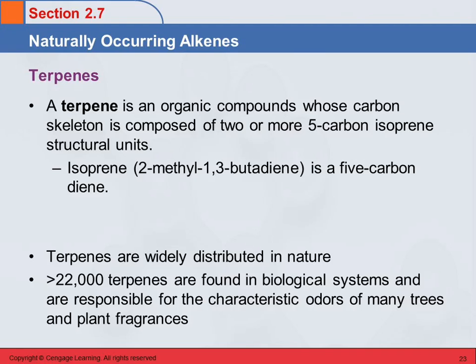Another group of naturally occurring alkenes are called terpenes. A terpene is a compound that has a skeleton composed of two or more five-carbon isoprene structural units. Isoprene is the common name for 2-methyl-1,3-butadiene.